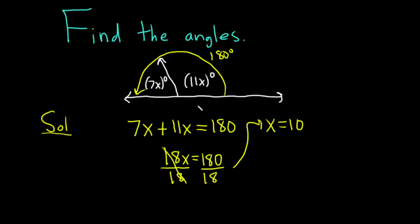To find the first one here we have 7x which is 7 times 10 which is 70. Now at this point I'm definitely going to put the little degree symbol. Super important to write it. So 70 degrees.